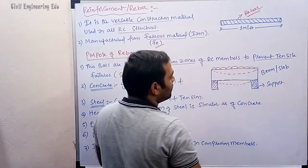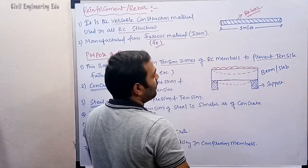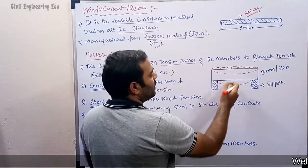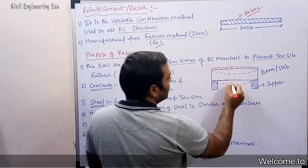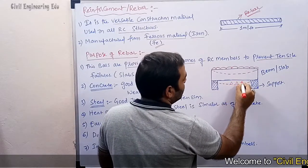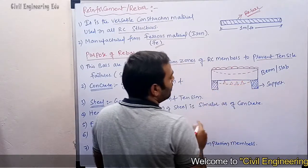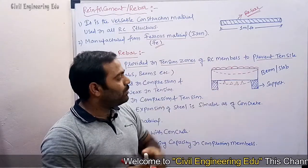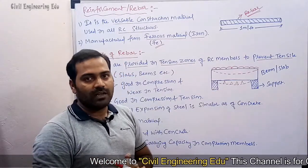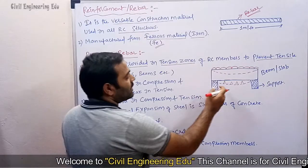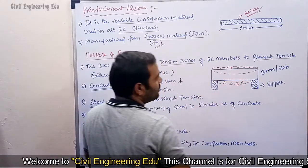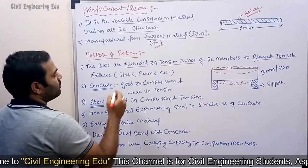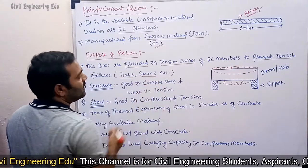For example, take a beam or a slab — this is a tension member. Whenever we apply a load on this member, the beam tends to bend. When the beam is bending, cracks will occur, the concrete will fail, and the beam will obviously fail. This is the reason we provide steel reinforcement in the tension zone to prevent this kind of failure.